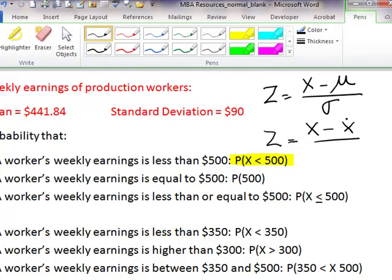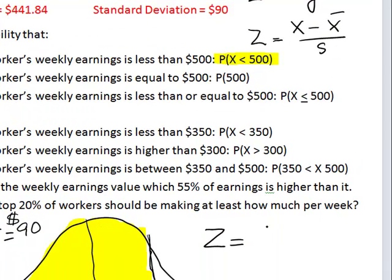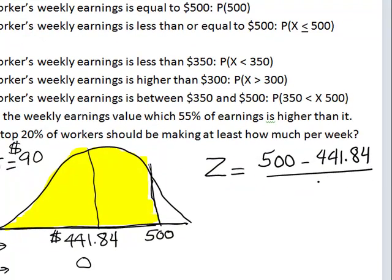In this problem, our x value is $500. We know the mean is $441.84 and standard deviation is $90. Z value computed to 4 decimals is 0.6462. But of course, because the z-table reports z values rounded to two decimals, I must round this value to 0.65.